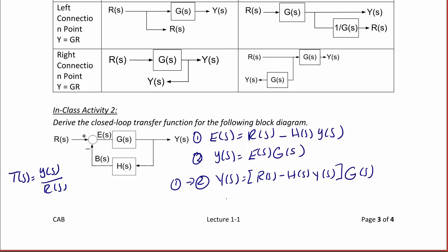And now we want to simplify to solve this for Y(s) over R(s). So we're going to have T(s) is equal to Y(s) over R(s), which equals G(s) over 1 plus G(s) H(s).